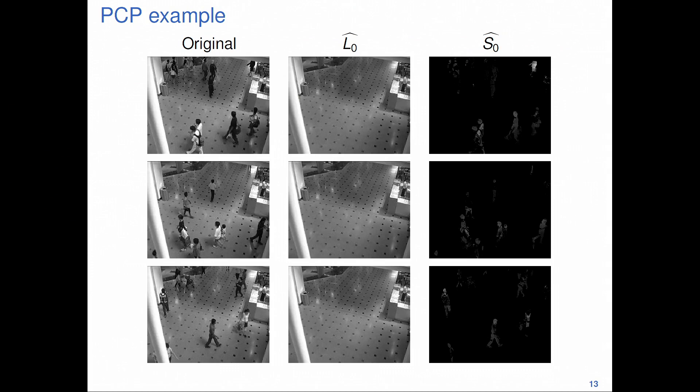The last column on the right shows results from the sparse matrix. What the sparse matrix picked out was the random movement of people in front of the camera — the unique events that still provide important information about the scene that we would be missing if we discarded them. The idea is: this works for video surveillance, so can we apply it in environmental health settings?